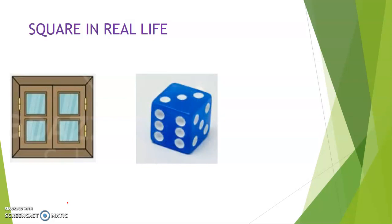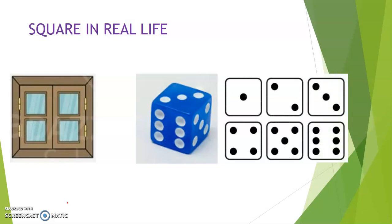Wow, what is this? This is a dice and it has six square faces. You can see that each of the sides of this dice is a square and it has six faces. Each of them is a square.